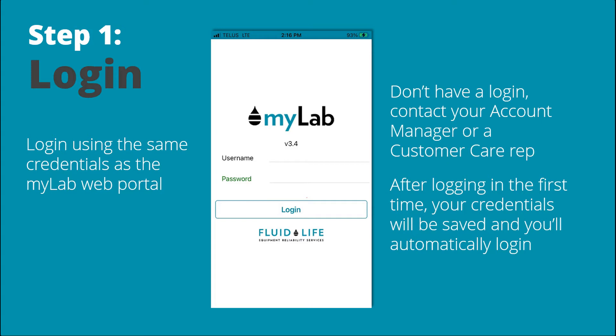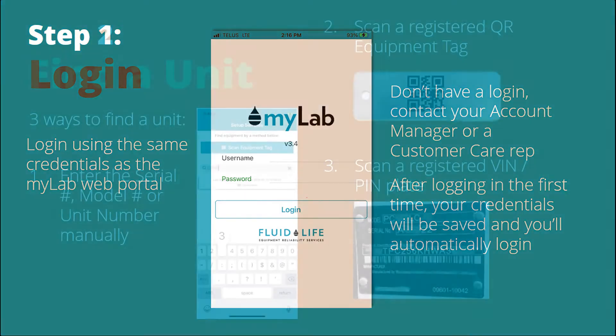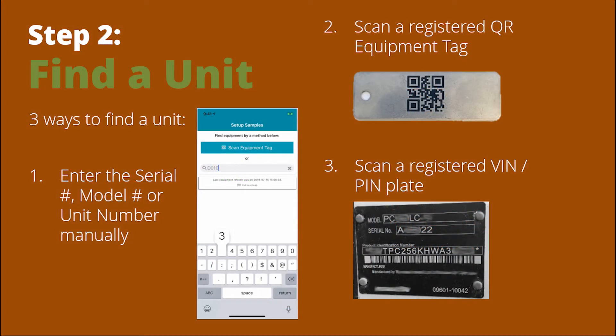Once you've logged in the first time, your credentials will be saved and you'll automatically log in. The next step is finding a unit. There are three ways to do this: either manually by entering the information, scanning a registered QR equipment tag, or scanning a registered VIN pinplate.